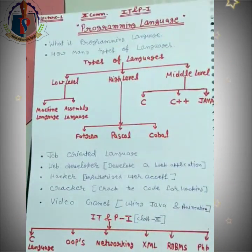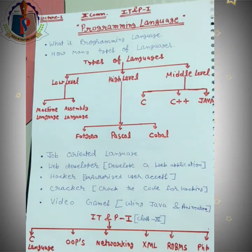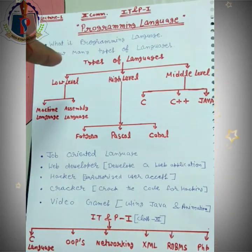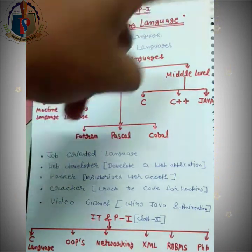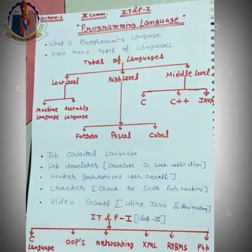Ab baat karte hain: how many types of programming languages are there? Hum sirf programming line ki baat kar rahe hain. Types of language mein — there are three types: first is low level language, second is high level language, and third is middle level language.